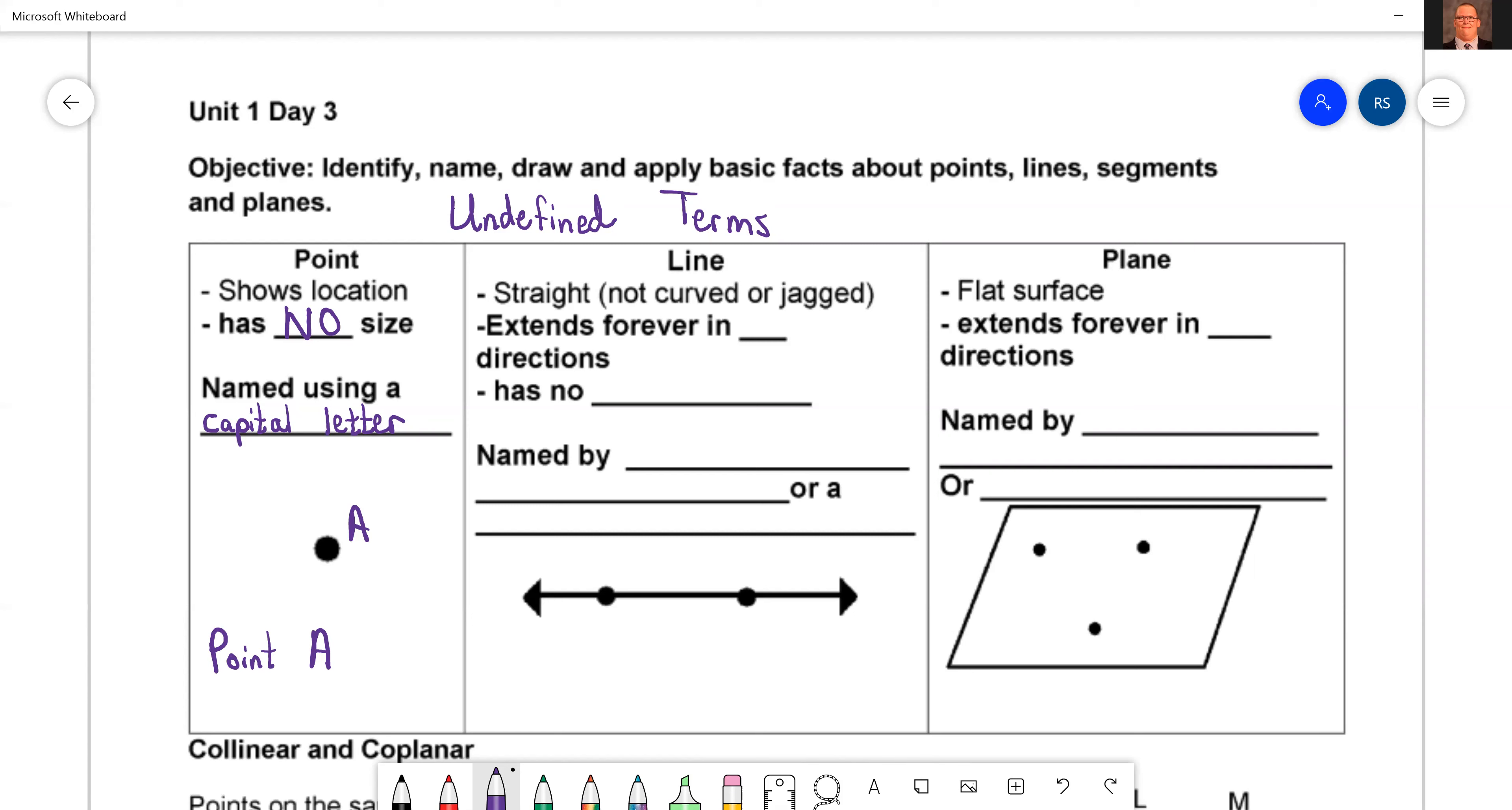Now let's take it one step further and look at a line. A line is straight. It's not curved like this, like a snake. It's not jagged like Harry Potter's lightning bolt. It's just straight. And it extends forever in two directions.